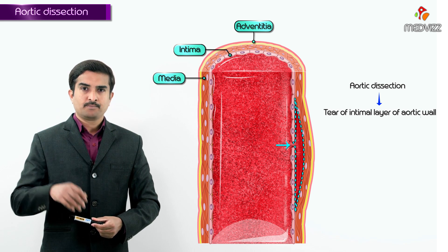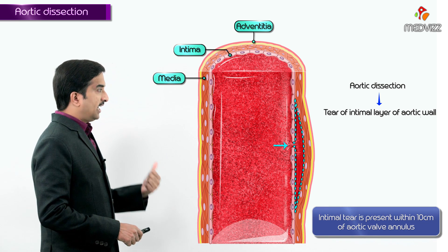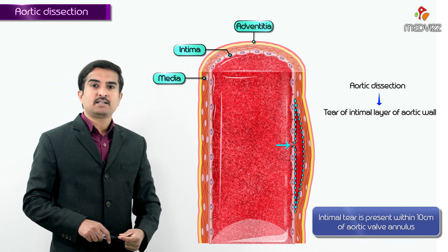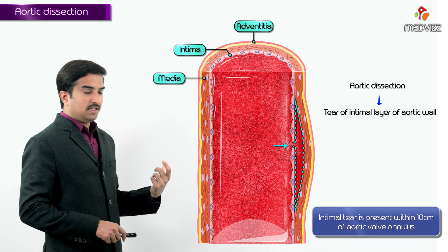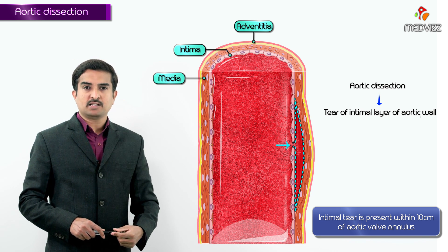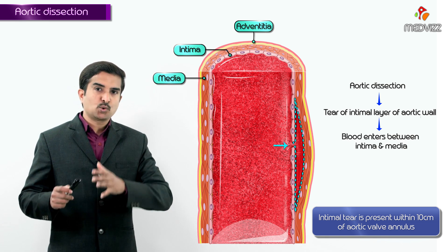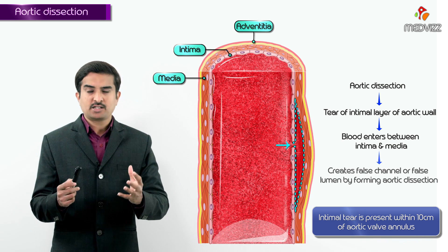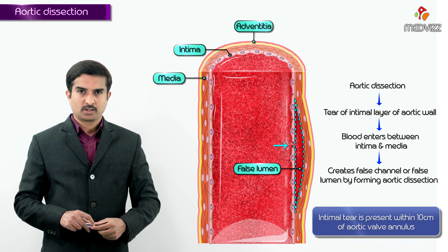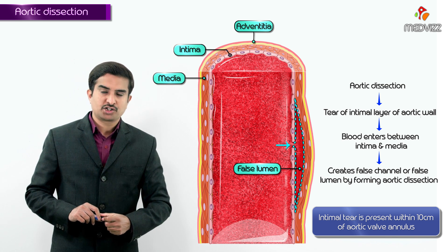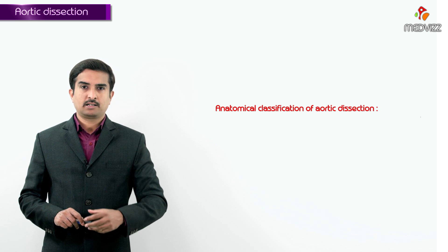In aortic dissection, there will be an intimal tear through which blood enters into the media. Usually the tear is present within 10 centimeters of the aortic valve annulus — from the beginning of the aorta, within 10 centimeters, we generally see the tear in the intima. From there, blood escapes between the intima and media, creating a false channel or false lumen, forming the aortic dissection.